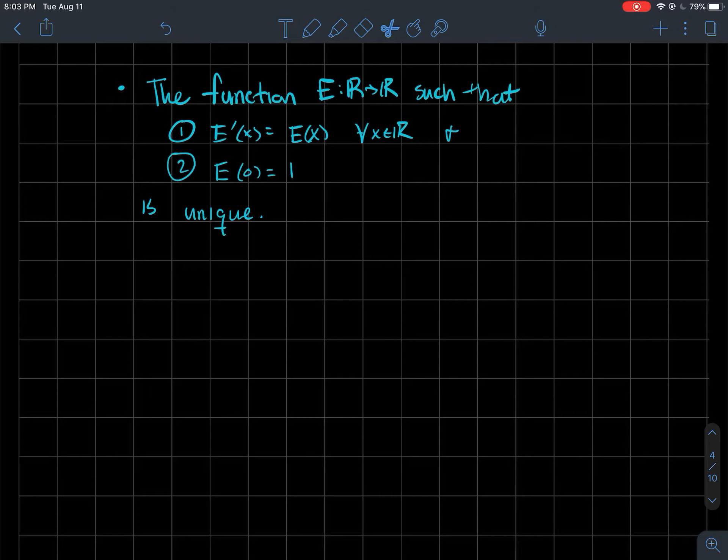So in the first video, we showed that there exists a function that we named capital E whose domain is real numbers and whose codomain is the real numbers such that this capital E had the following two properties. The first one says that capital E is its own derivative for every single x in R, and the second property says that its y-intercept is 1.